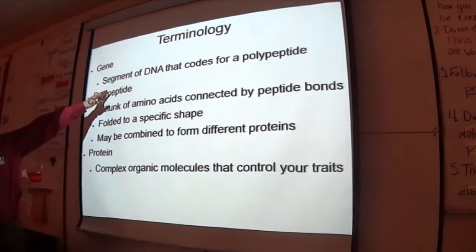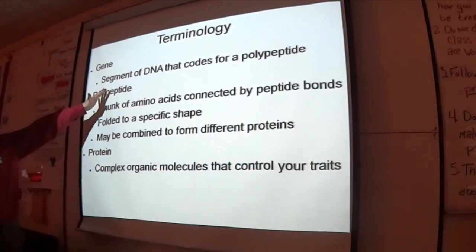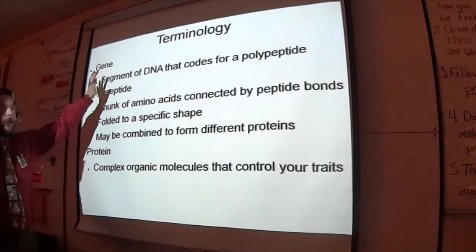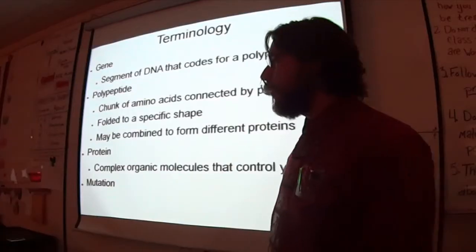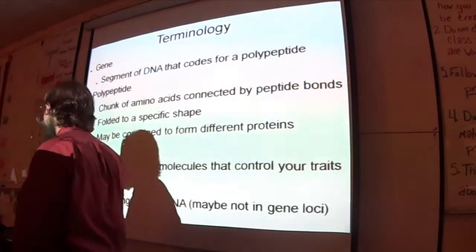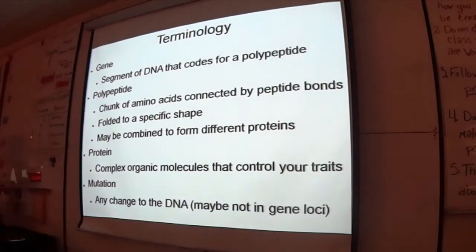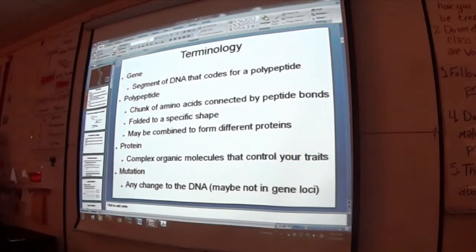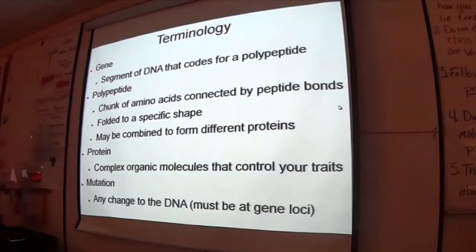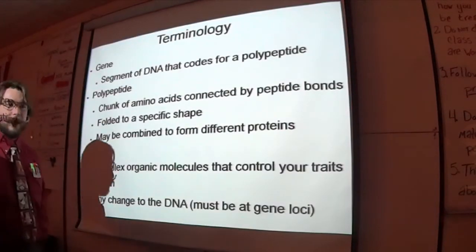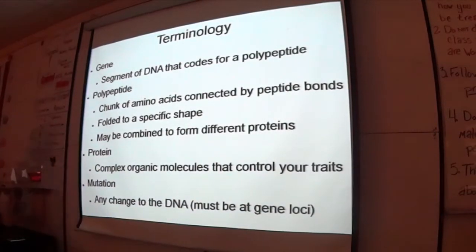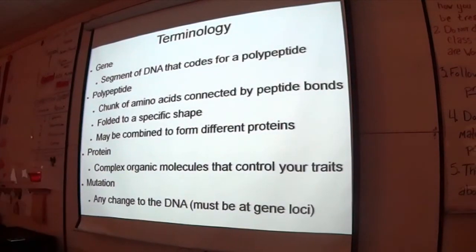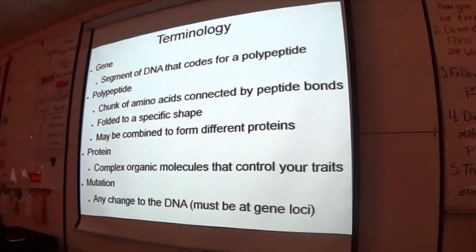The gene says make the brown one, not the blue or green one. Make the brown one — and I got those genes from my parents. Any mutation is any change to the DNA, and it must be at a gene locus. Otherwise we don't really consider it to be a mutation — it's just a normal change to your DNA. Locus, or loci, is the location of a gene on the chromosome.